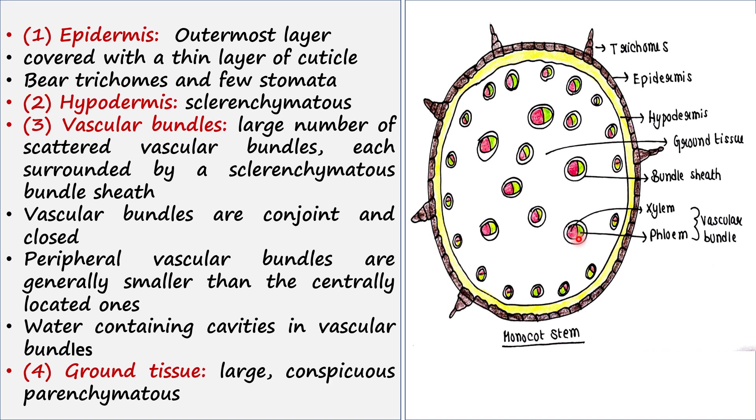We can say that vascular bundles are conjoint and they are closed, because between xylem and phloem they do not have any cambium. Cambium is present in dicot stem between xylem and phloem, but here you will not get any cambium between them. We call this type of arrangement closed vascular bundles.